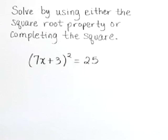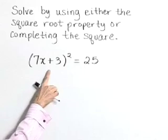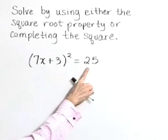Solve by using either the square root property or completing the square. The equation is 7x plus 3 quantity squared equals 25.